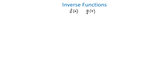The definition of inverse functions tells us that two functions, f and g, are inverses of each other if the composition of f and g is equal to x, and the composition of g and f is also equal to x. So if f and g are inverse functions, then f of g of x equals x, and g of f of x is also equal to x.